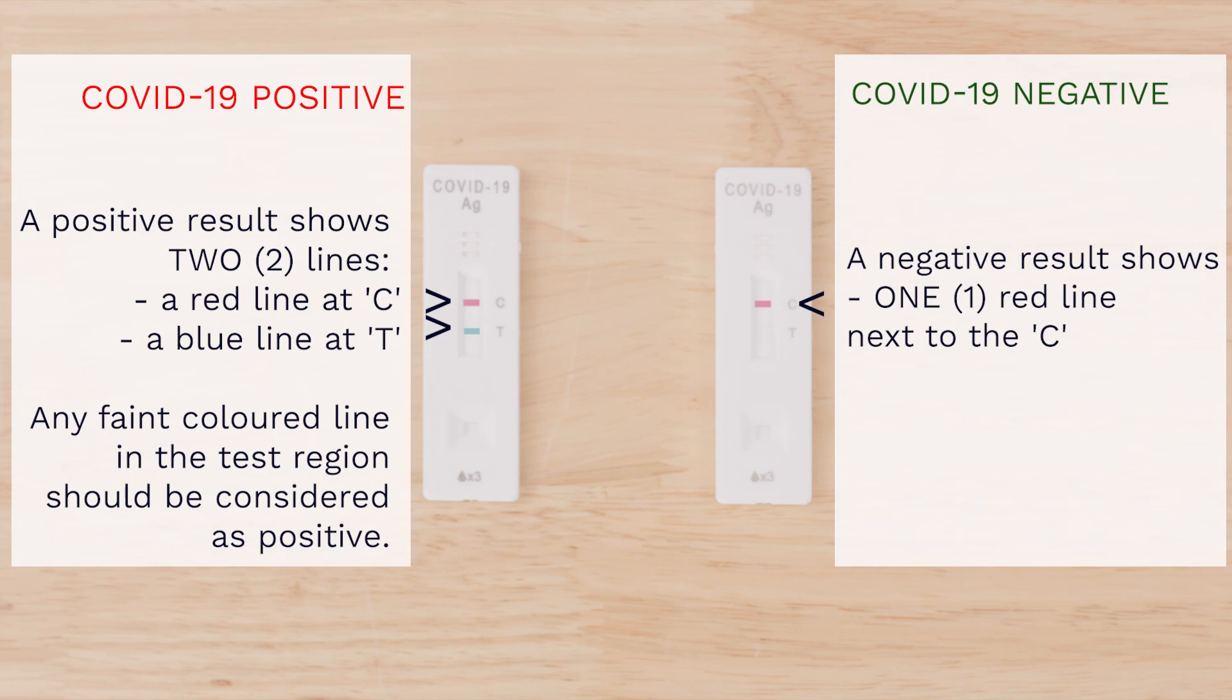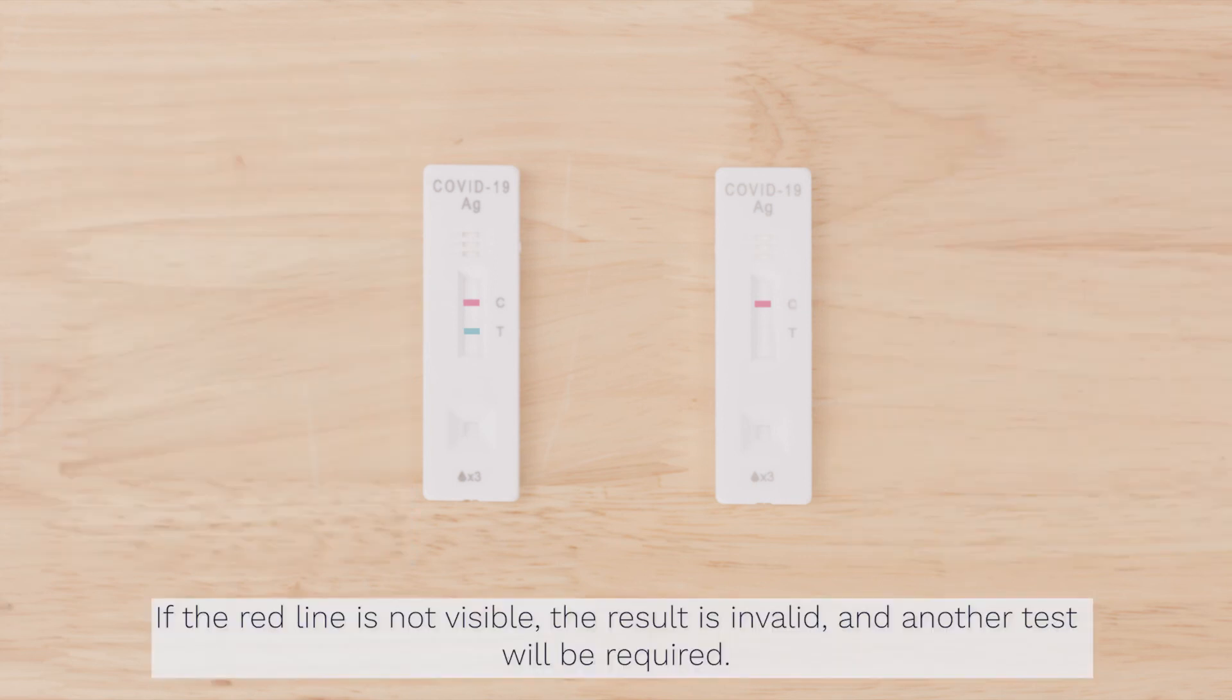COVID-19 negative. A negative result shows one red line next to the C. If the red line is not visible, the result is invalid and another test will be required.